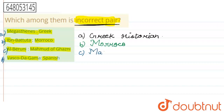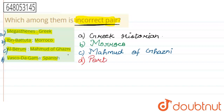Now, when you look at option D, it says Vasco de Gama – Spanish. Vasco de Gama was not Spanish; he was from Portugal and was Portuguese. So option D is an incorrect pairing. Since we needed an incorrect pair, option D is our answer.